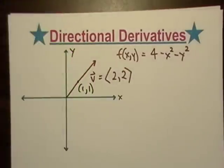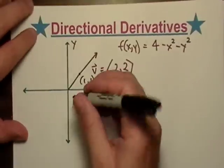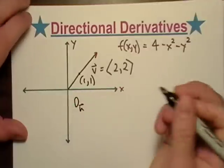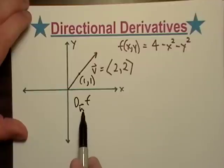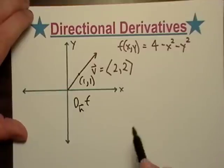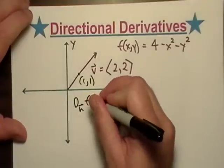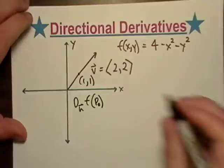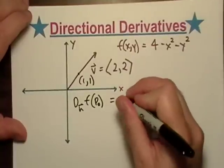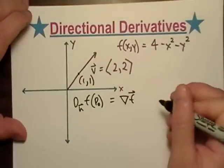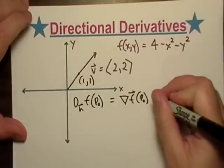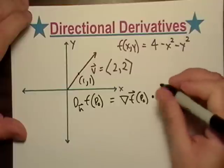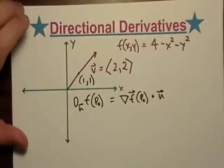Let's look at the formula for a directional derivative. The notation is D with a subscript unit vector, then F, and you could put P-sub-zero like that. What that's equal to is the gradient of F at whatever point you're interested in, dotted with the unit vector.